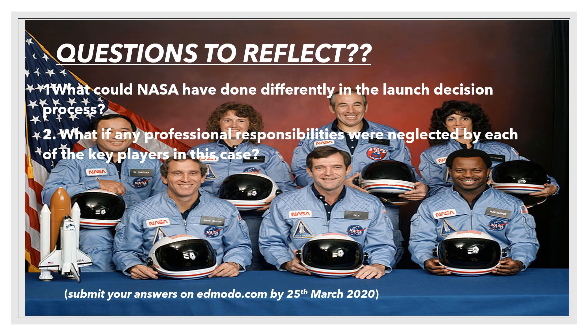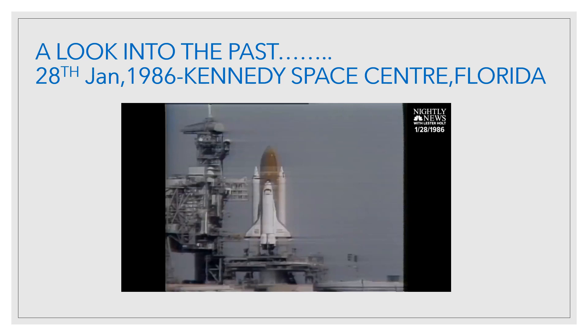The questions we can reflect on are: What could NASA have done differently in the launch decision process to save the lives of the seven crew members? What professional responsibilities were neglected by each of the key players — Joseph Kilminster, Larry Molloy, NASA as a whole, and Morton Thiokol as a whole? What could they have done to keep the situation under control and prevent the disaster? I want you to watch this video of what happened on 28th January 1986.